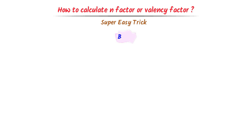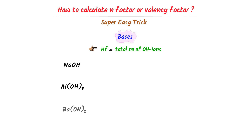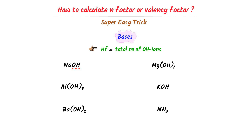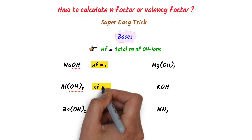Now we will learn calculating n-factor of bases. In case of bases, n-factor is equal to the total number of hydroxide ions present in a compound. For example, consider these compounds. In case of sodium hydroxide, there is only one hydroxide ion, so its n-factor is 1. In case of aluminum hydroxide, there are 3 hydroxide ions, so its n-factor is 3.